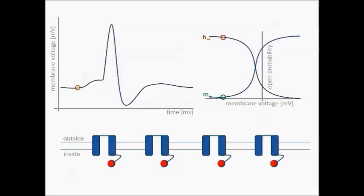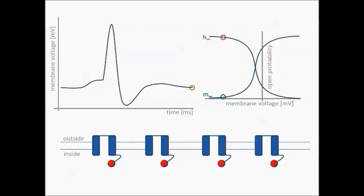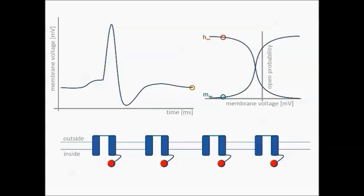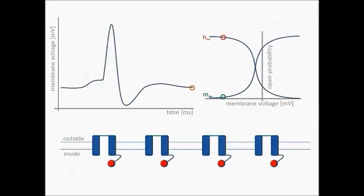I will now show four sodium channels plus the changes in membrane potential and the changes in open probability as the action potential unfolds. Please pay particular attention to the slightly different gate openings and closings of the four channels. In general, you will see the four different states of the sodium channel: opening of the activation gate, closing of the inactivation gate, closing of the activation gate, and opening of the inactivation gate. This, in a nutshell, shows the conformational changes of the fast voltage-gated sodium channel during the action potential.